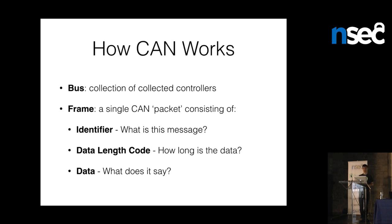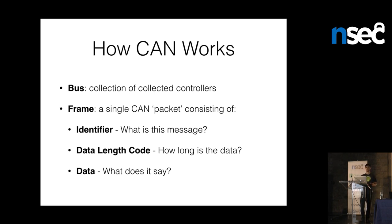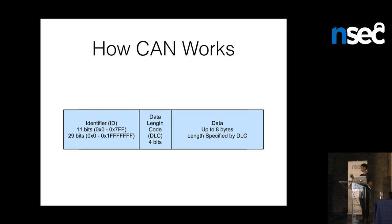Let's talk about the protocol itself. You have a bus — a bunch of controllers connected together, usually high-speed differential twisted pair. On that bus you'll have frames, which are the lowest level packet of CAN. They consist of three main things: an identifier, which says what the message is; a data length code, which says how many bytes of data are in it, up to 8; and then your data, which is 0 to 8 bytes. The identifier is an 11 or 29-bit ID, the data length code is 4 bits, and then your data. From a software point of view, that's really all it is on the wire.